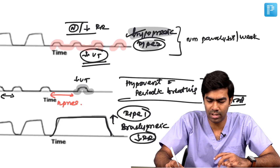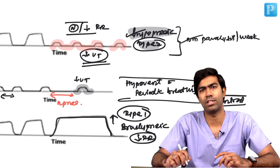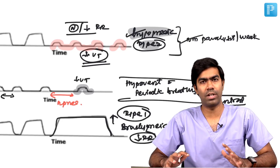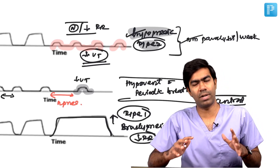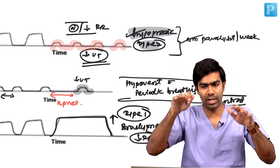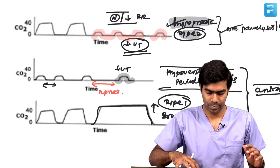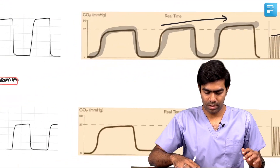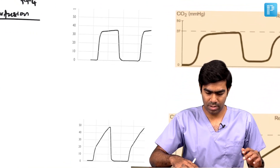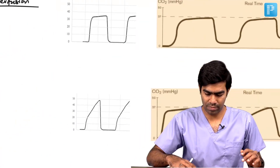Neuromuscular weakness or excessive sedation during anesthesia are some of the reasons for this kind of hypoventilation. Remember: hypoventilation is not just what you see on the waveform, but for exam purposes, hypoventilation means high EtCO2 and hyperventilation means low EtCO2. That's it.